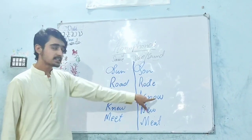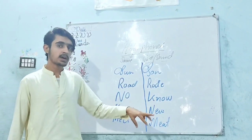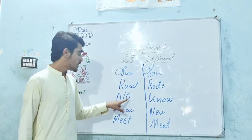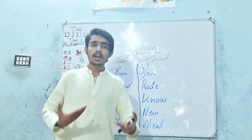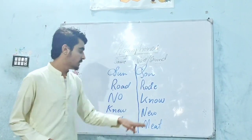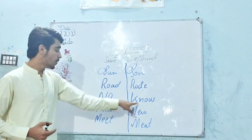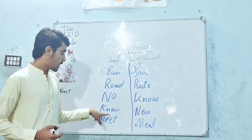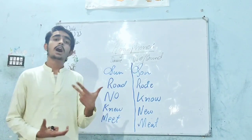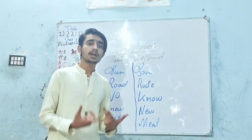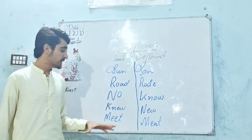This is no and know. The K is silent — as you all know, when K and N come together, K becomes silent. No means nahi (no/not), and know means jana (to know something). Knew is the second form of know — K is again silent in knew. We use knew in past simple tense.